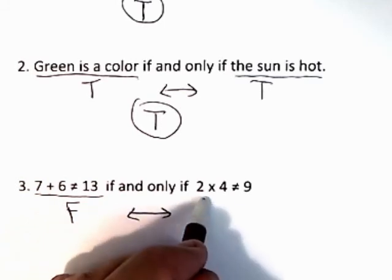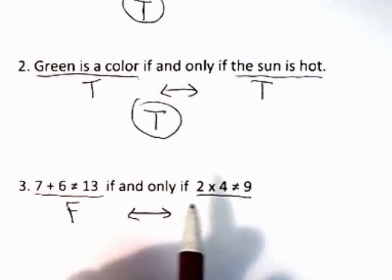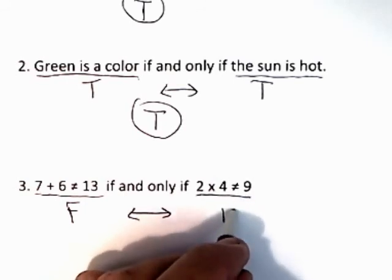And if and only if is your biconditional, and 2 times 4 is 8 and 8 is not equal to 9. That's a true statement. 8 is not equal to 9, that's a true statement.